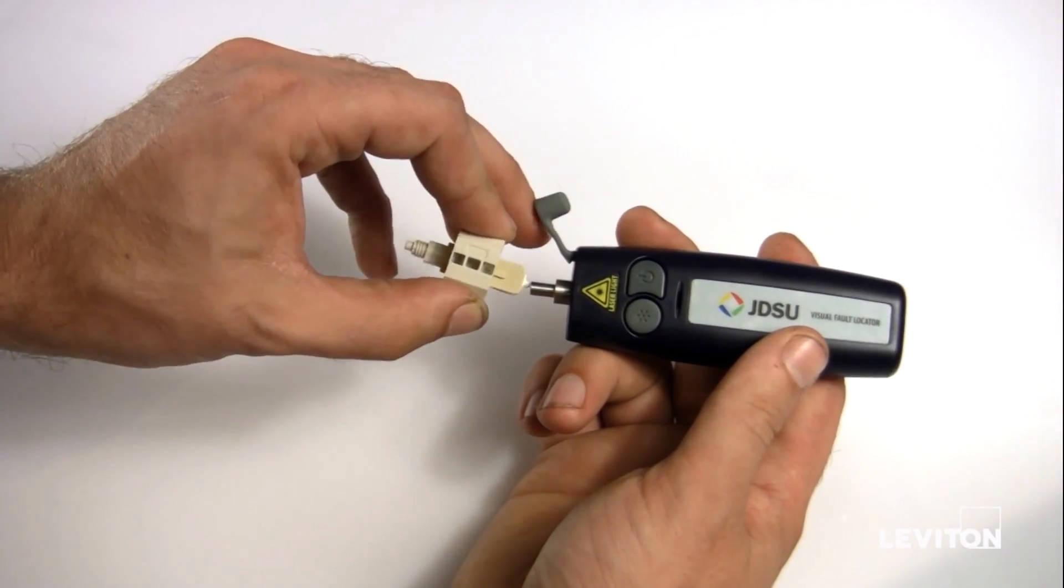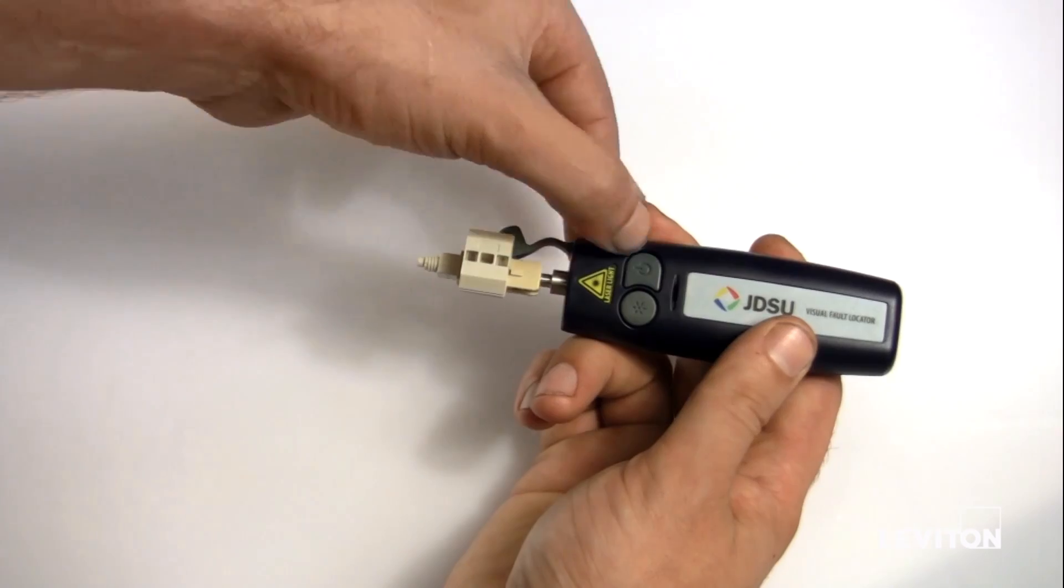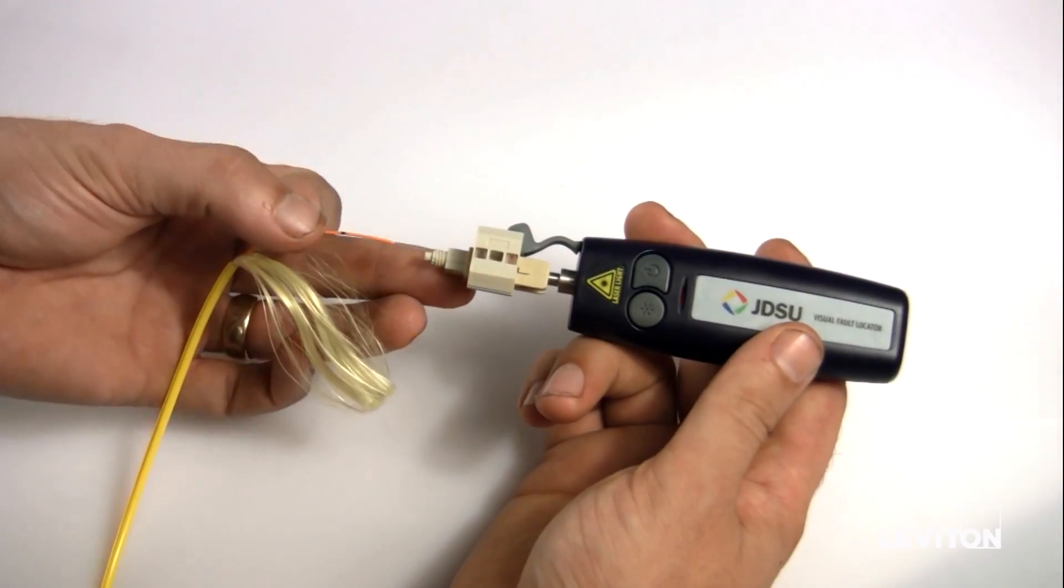Leviton offers an optional visual fault locator to quickly check for light loss resulting from bends, breaks, or defective connectors.